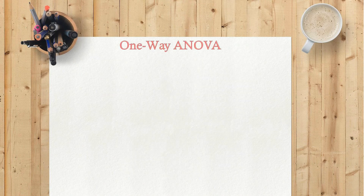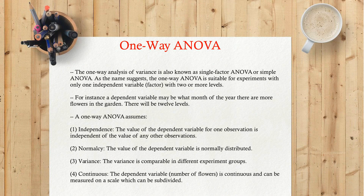One-way ANOVA. The one-way analysis of variance is also known as single factor ANOVA or simple ANOVA. As the name suggests, the one-way ANOVA is suitable for experiments with only one independent variable, or factor, with two or more levels. For instance, a dependent variable may be what month of the year there are more flowers in the garden — there will be twelve levels.